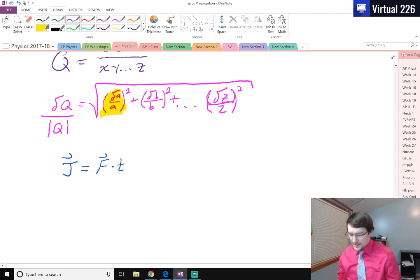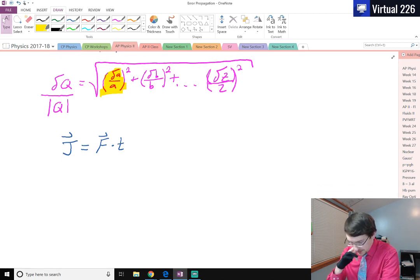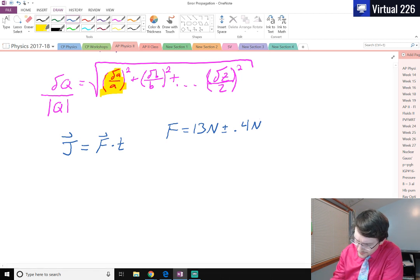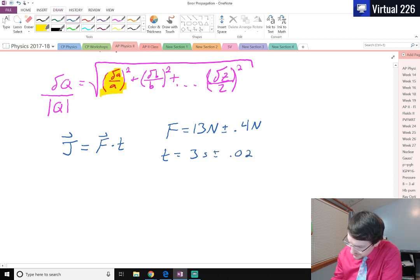Well, if we're multiplying these values together, let's take a look at what our impulse could be. The force that we measured, let's say our force is something like 13 newtons plus or minus 0.4 newtons. And let's say our time here is 3 seconds plus or minus 0.02 seconds.